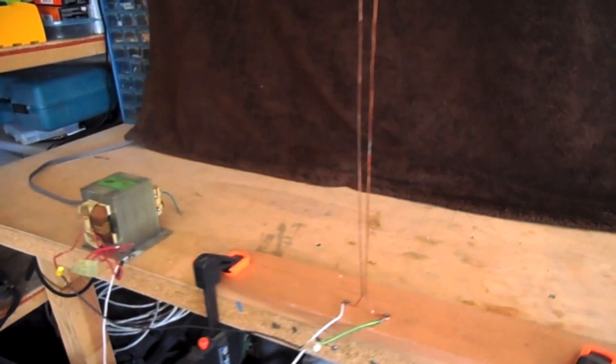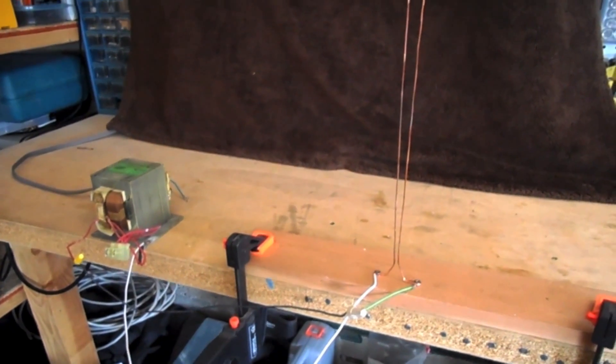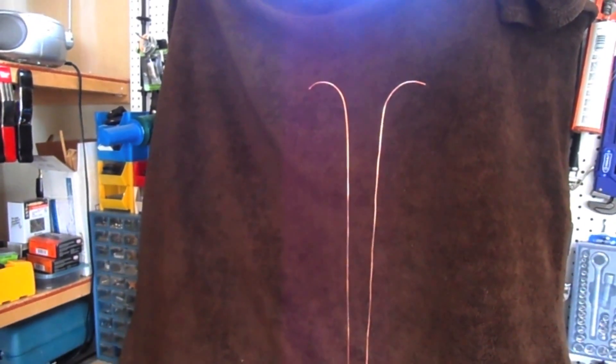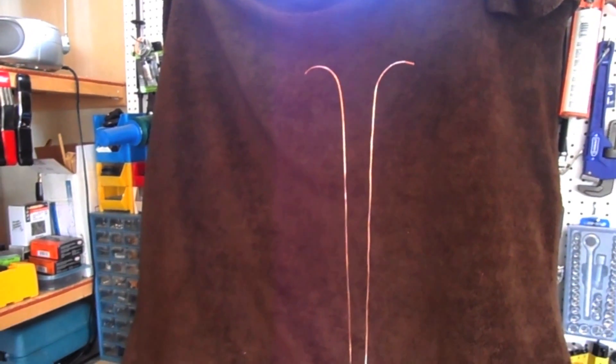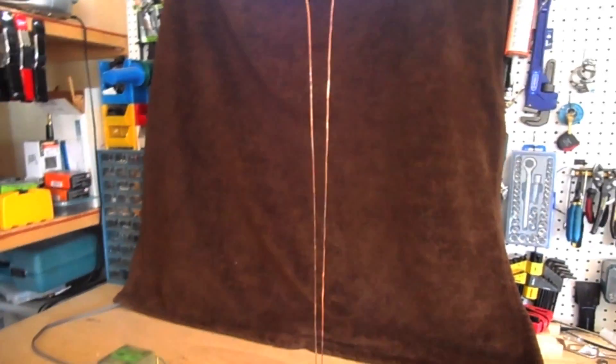You're dealing with high voltages here, so exercise caution. Never approach the Jacob's ladder when the transformer is energized. In order to start the arc at the bottom, I used a dry dowel with a nail driven into the end. This allowed me to operate it from a safe distance.